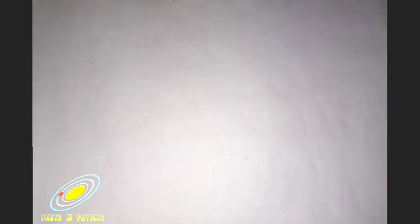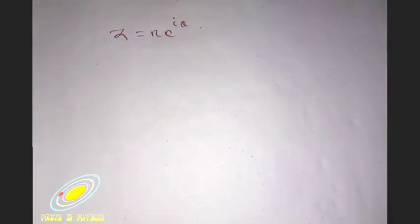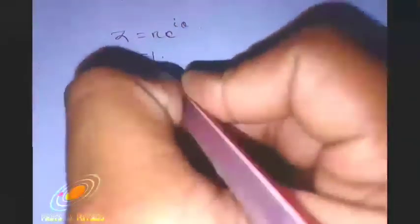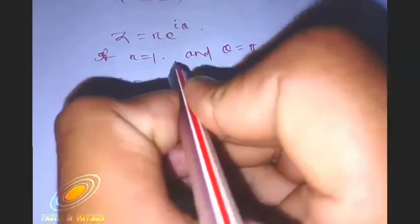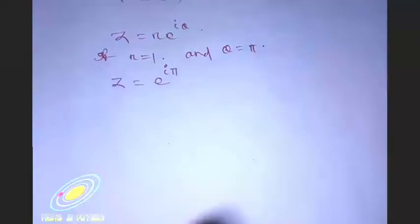Z equals r e to the i theta. Now if r equals 1 and theta equals pi, then what will happen? Z will be e to the power i pi. Now I can write it in the obvious form.